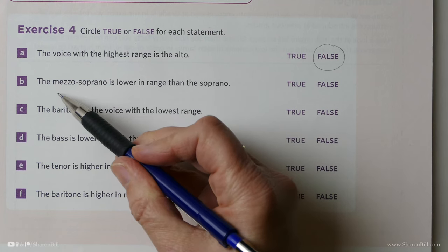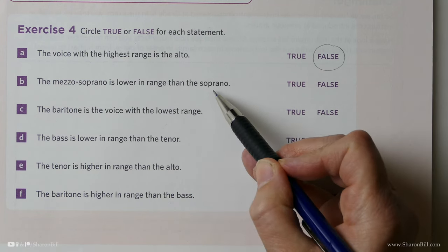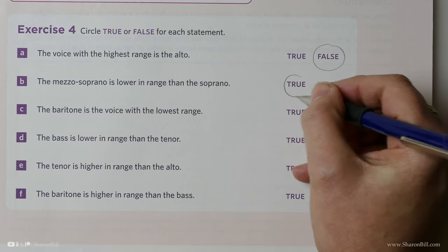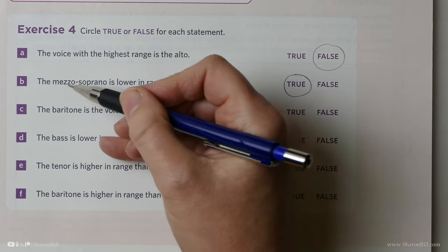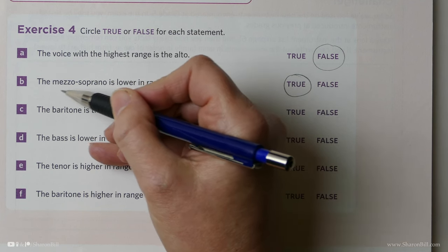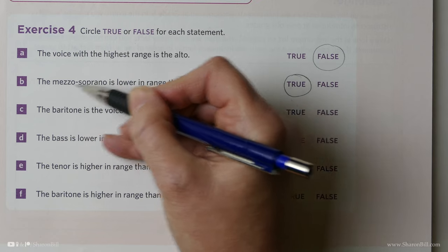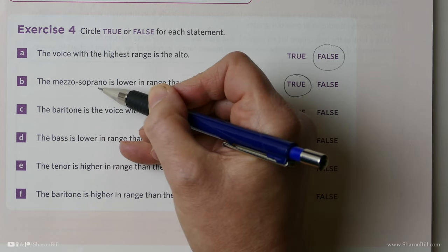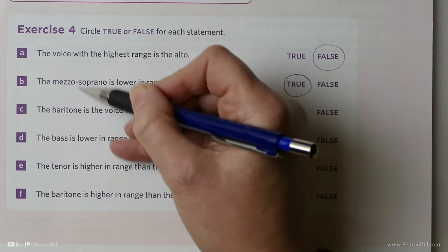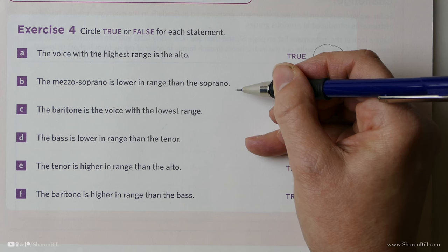Is it true that the mezzo-soprano is lower than the soprano? This is true, and that makes perfect sense if you think about it. Mezzo, we know mezzo-forte, mezzo-piano, and so on. Mezzo means sort of moderately, so kind of moderate soprano, middle soprano. Mezzo-soprano is the mid between the soprano and the alto.